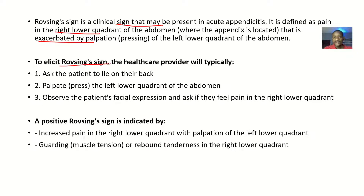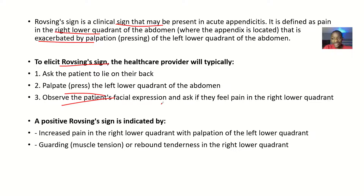To elicit the Rovsing sign, the healthcare provider asks the patient to lie on their back, then palpates or presses the left lower quadrant of the abdomen. While pressing, you should observe the patient's facial expressions, not just the abdomen, because patients can resist showing pain — even if they don't shout, their facial expression may change. A positive Rovsing sign is indicated by increased pain in the right lower quadrant with palpation of the left lower quadrant.